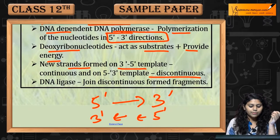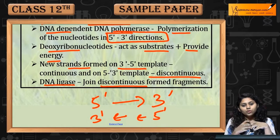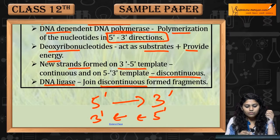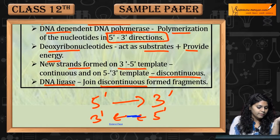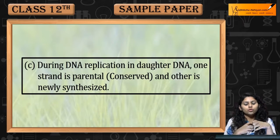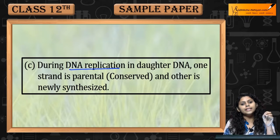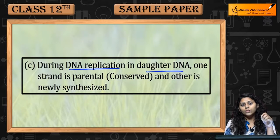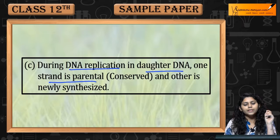Both discontinuous and continuous strands are formed. DNA ligase joins the discontinuous strand fragments together. During DNA replication, in the daughter DNA, one strand is parental — which is conserved — and the other is newly synthesized.